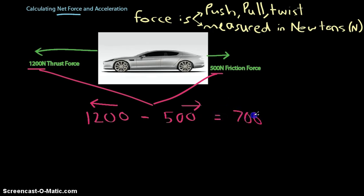And what I end up with then is a value of 700 newtons. So this is the net force acting on this car. That's 700 newtons. So the difference between 1200 newtons in this direction and 500 newtons in this direction is 700 newtons. So that's basically how we work out our net force. It's the difference between the two opposing forces.